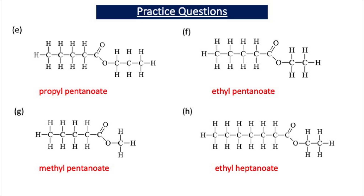If I look at ester H, I have a C2H5 group attached to the oxygen - that is an ethyl group. The rest of the molecule resembles heptanoic acid, so the ester is called ethyl heptanoate.